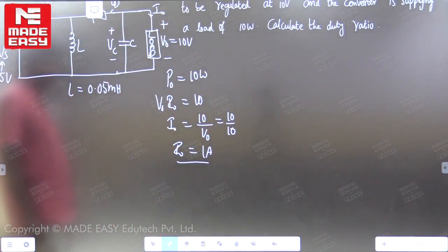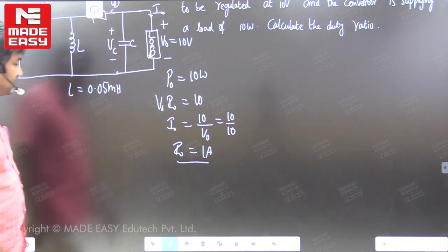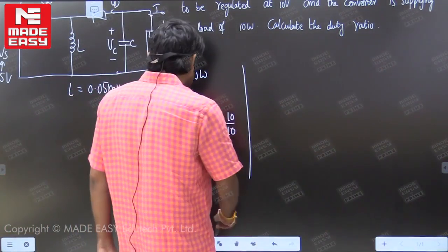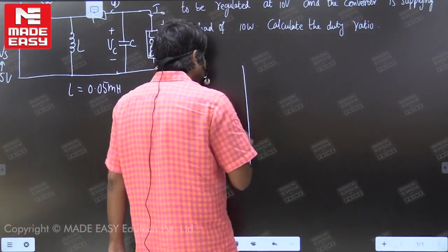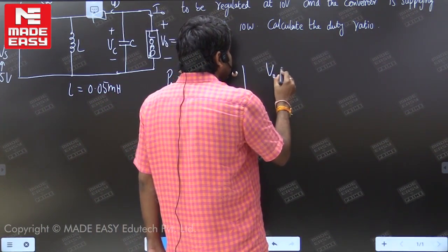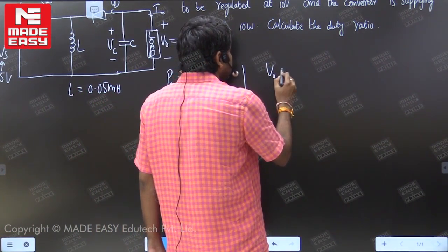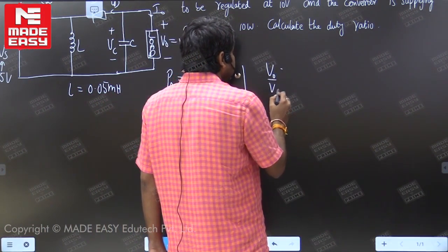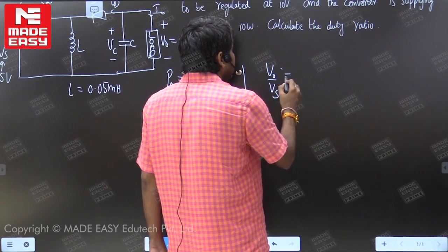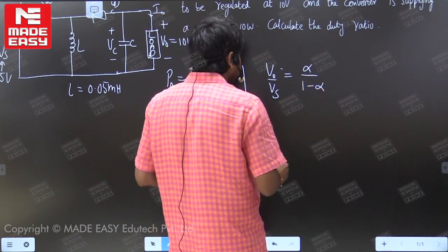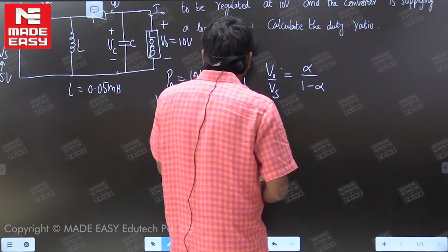We have to find the duty ratio. Normally for a buck-boost converter, the formula for output voltage is: V_naught divided by V_s is equal to alpha divided by (1 minus alpha). So alpha is equal to... let us calculate.